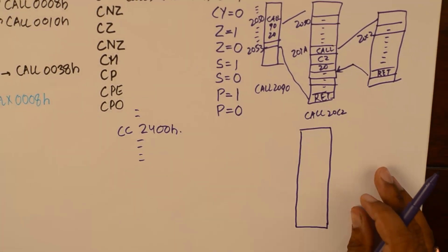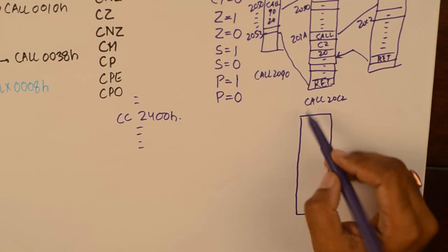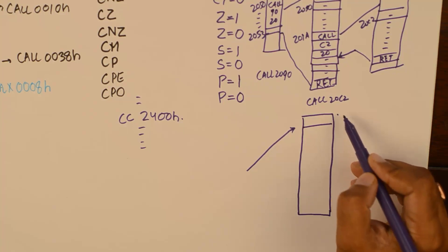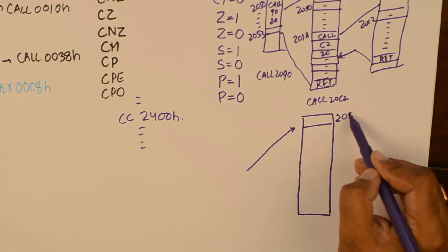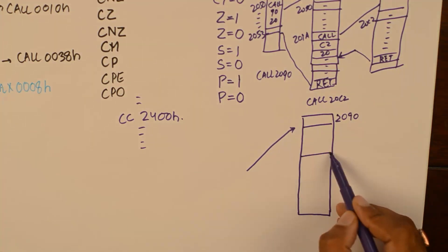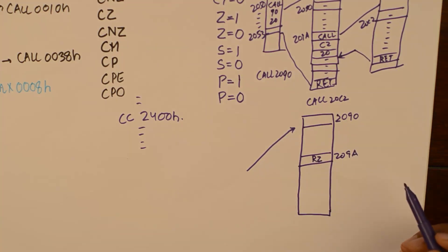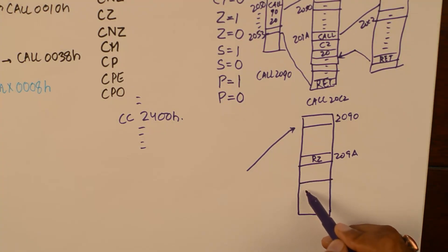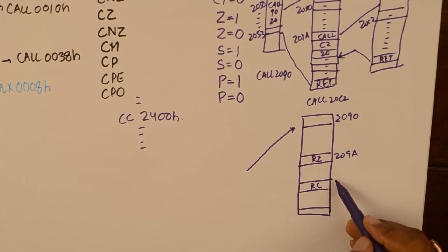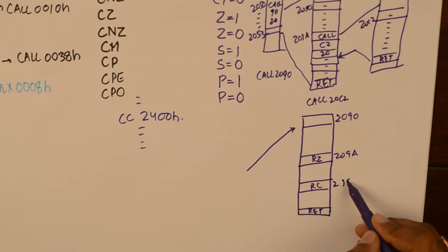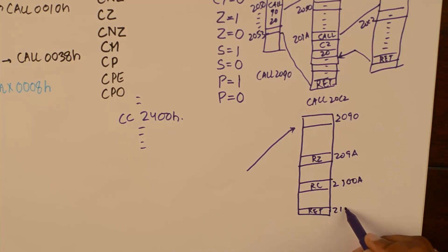Multiple ending subroutines means that we have come from the main program to a subroutine at, say, address 2090. At address 209A we see a return-if-zero instruction, then a return-if-carry instruction, and finally at a later point an unconditional return.